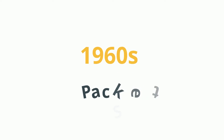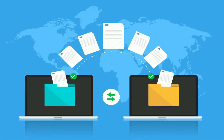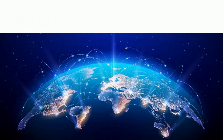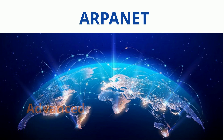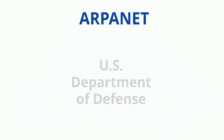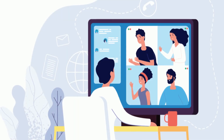In the 1960s, packet-switching technology came to facilitate data exchange. The first workable prototype of the internet came in the late 1960s with the creation of ARPANET, or the Advanced Research Projects Agency Network. Originally funded by the US Department of Defense, ARPANET used packet-switching to allow multiple computers to communicate on a single network, and it's called the first internet.